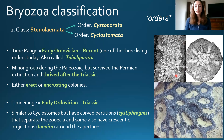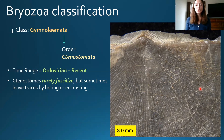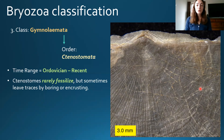Moving on to the class Gymnolaemata — this includes the orders Ctenostomata and Cheilostomata. Starting with ctenostomes, this order went from the Ordovician to recent and is still living today. However, ctenostomes rarely fossilize and their fossil record is poor. They do sometimes leave behind trace fossils by encrusting or boring into other organisms — for example, here we see a zoomed-in image of a brachiopod shell showing trace fossils where something encrusted on the organism.